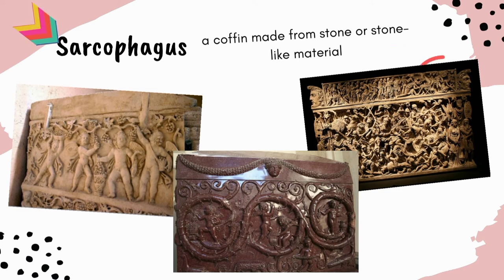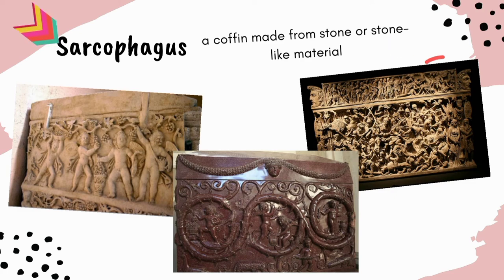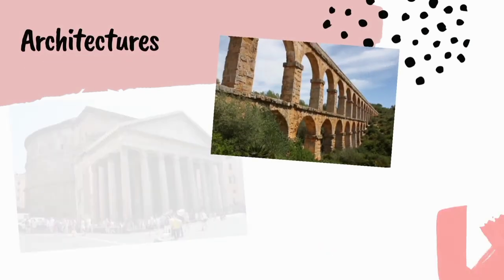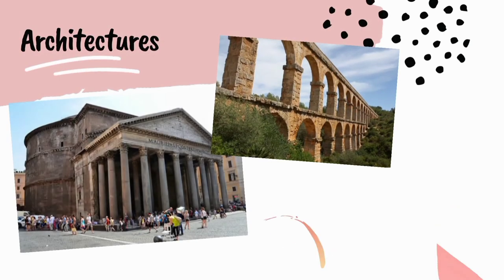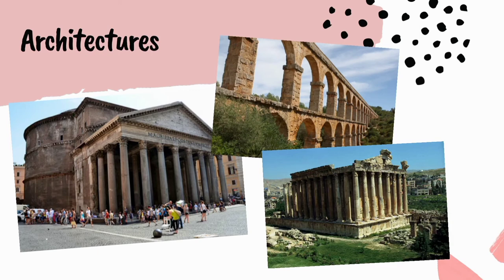Early Christian sculpture culminated in the form of sculpted sarcophagi. A sarcophagus — meaning 'flesh eater' in Greek — is a coffin for inhumation burials, widely used throughout the Roman Empire starting in the second century AD.